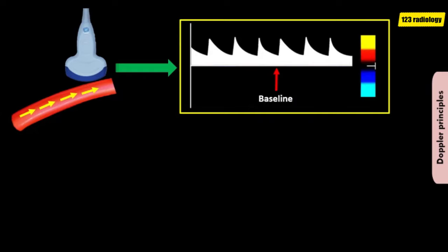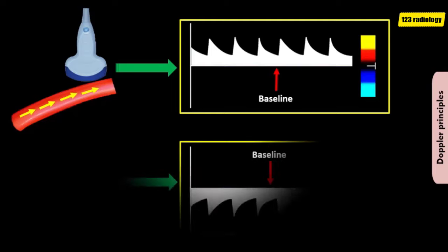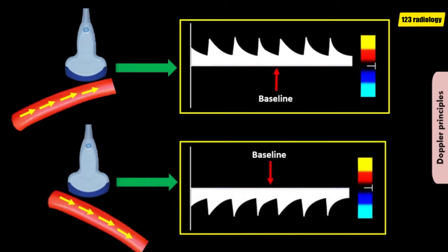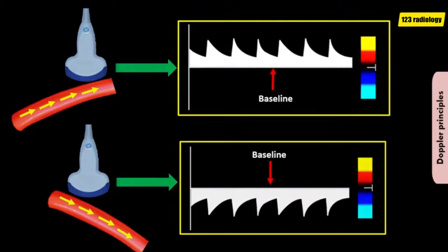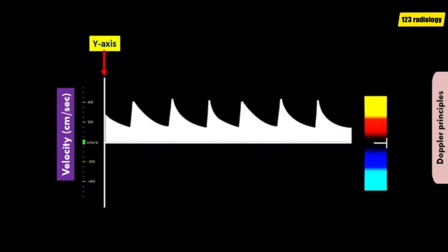If the blood flow direction is towards the transducer, the waveform is represented above the baseline. If the blood flow direction is away from the transducer, the waveform is represented below the baseline. On the y-axis, as you can see on this image, there is the velocity in centimeters per second.